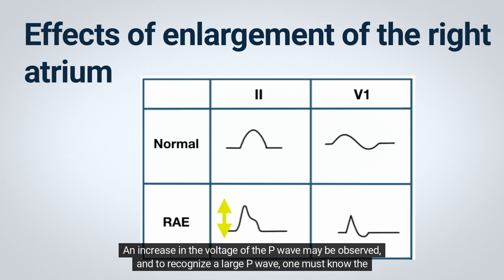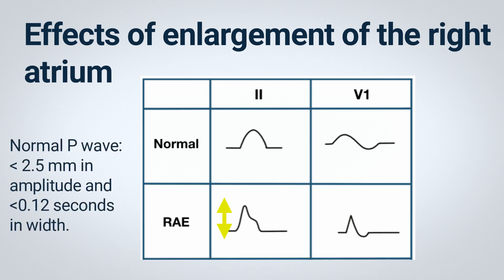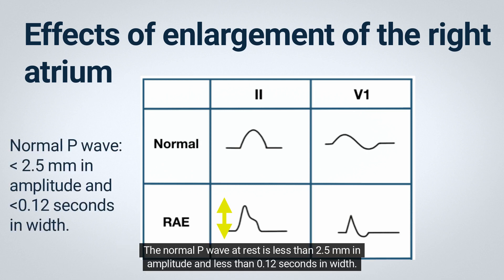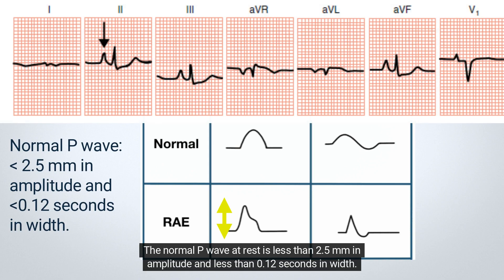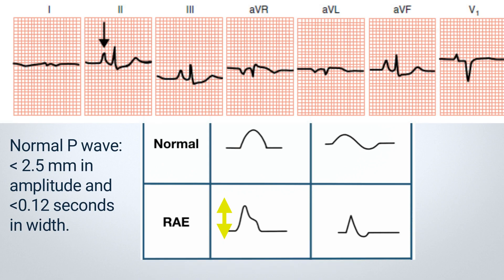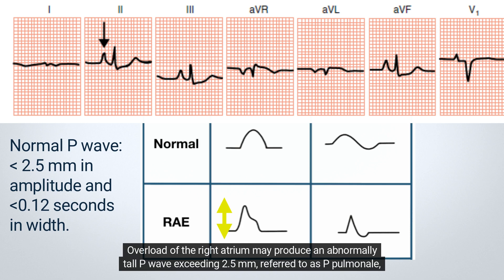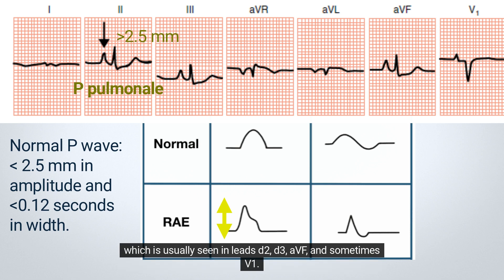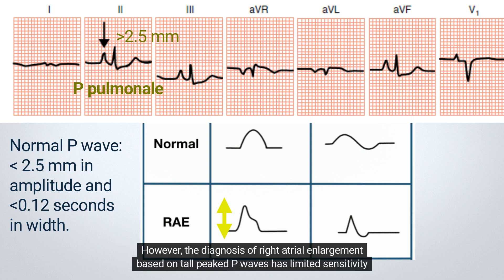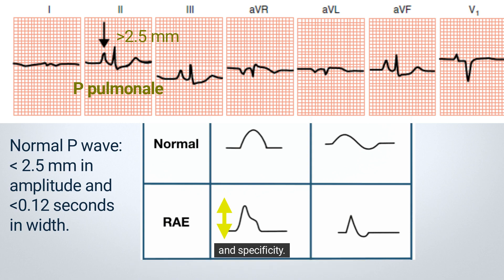An increase in the voltage of the P-wave may be observed, and to recognize a large P-wave, one must know the dimensions of a normal P-wave. The normal P-wave at rest is less than 2.5 mm in amplitude and less than 0.12 seconds in width. Overload of the right atrium may produce an abnormally tall P-wave exceeding 2.5 mm, referred to as P-pulmonale, which is usually seen in leads D2, D3, AVF, and sometimes V1. However, the diagnosis of right atrial enlargement based on tall peaked P-waves has limited sensitivity and specificity.